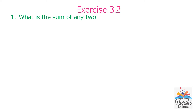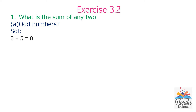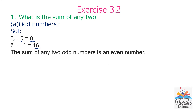Question number 1. What is the sum of any two odd numbers? If we add any two odd numbers, we will get an even number. For example, 3 plus 5 equals 8. Here 3 is an odd number and 5 is also an odd number. 3 plus 5 equals 8, which is an even number.